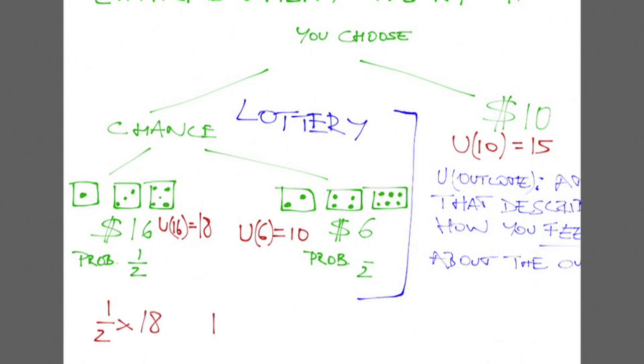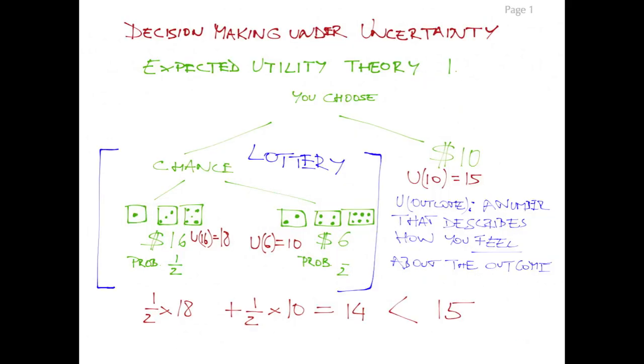Your expected utility from choosing to play is 1/2 times 10 plus 1/2 times 18, which is 14. So you would choose not to play the game but to take the $10. The reason is that the utility function we defined has risk aversion built into it.